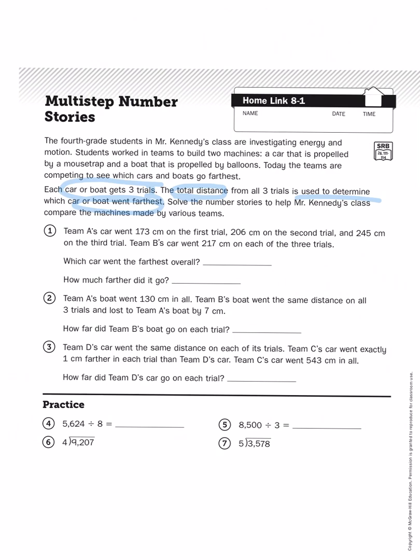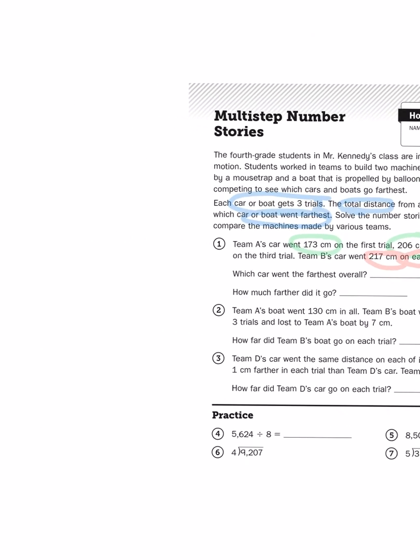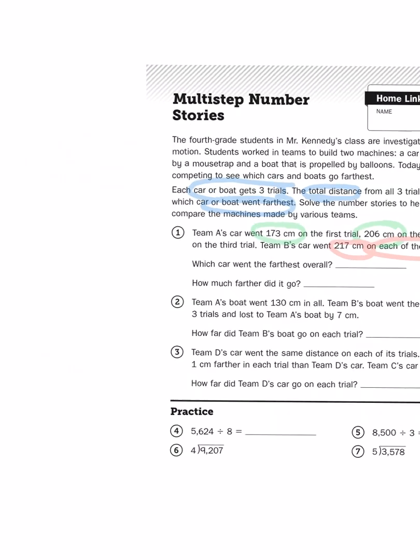So, Team A, I'm going to use some green. 173, 206, and 245 centimeters. Team B's car, which I'll use in red, went 217 centimeters each of the three trials. That's some consistent results right there. How do I figure out which car went farthest? Well, for Team A, I need to do some addition because I got three different results.